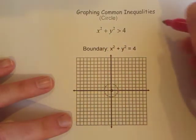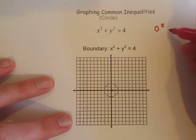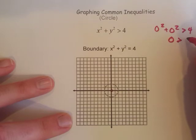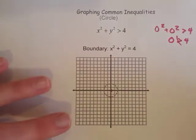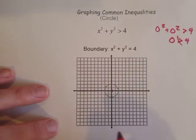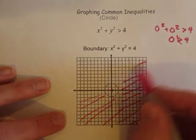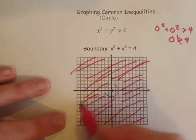If I plug in 0, 0, that means I've got 0 squared plus 0 squared is greater than 4, so 0 greater than 4. That's not true, so it must not be inside that we're shading. And so everything is shaded on the outside in the case of this circle.